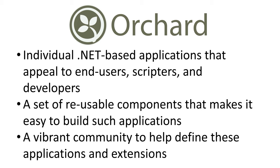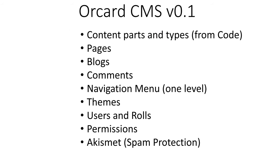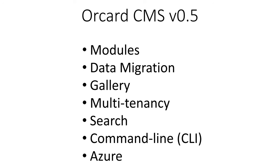A community to help define applications and extensions. Orchard CMS 0.1 featured content parts and types, pages, blogs, comments, navigational menus, themes, users and roles, permissions, and Akismet spam protection. In release version 0.5, they added modules, data migration, gallery, multi-tenancy, search, command line, and Azure functionality.